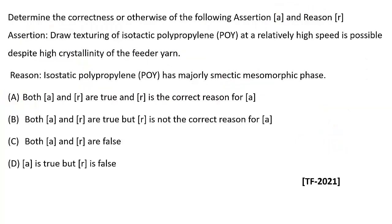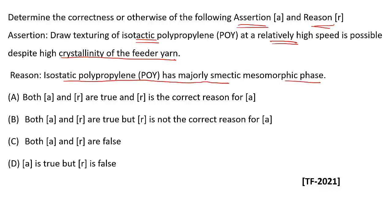The next question is an assertion-reason type. You must determine whether the assertion and reason are both correct and if the reason correctly explains the assertion. Assertion: draw texturing of isotactic polypropylene at relatively high speed is possible despite high crystallinity of the feeder yarn. Reason: isotactic polypropylene has a majorly symmetric mesomeric phase.